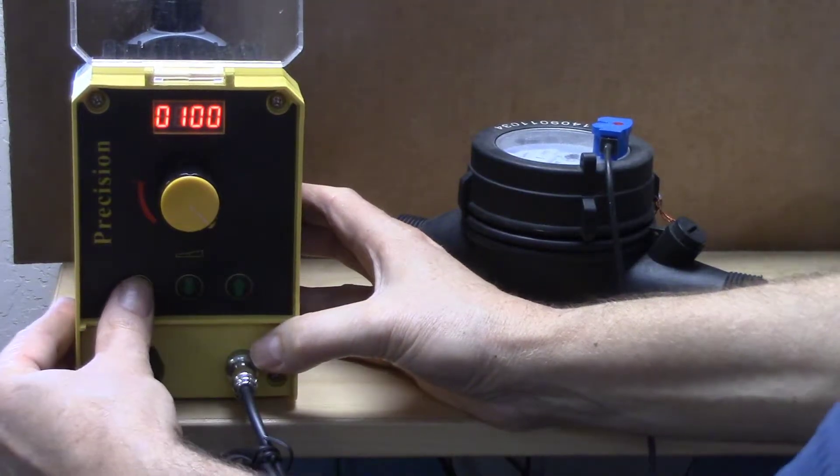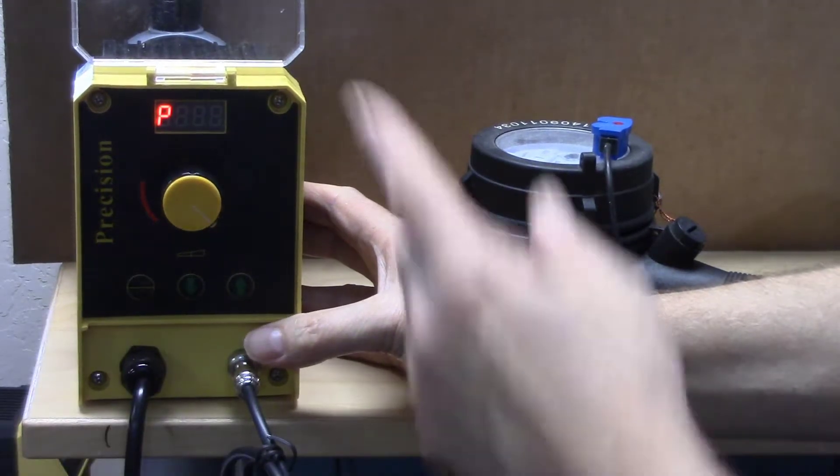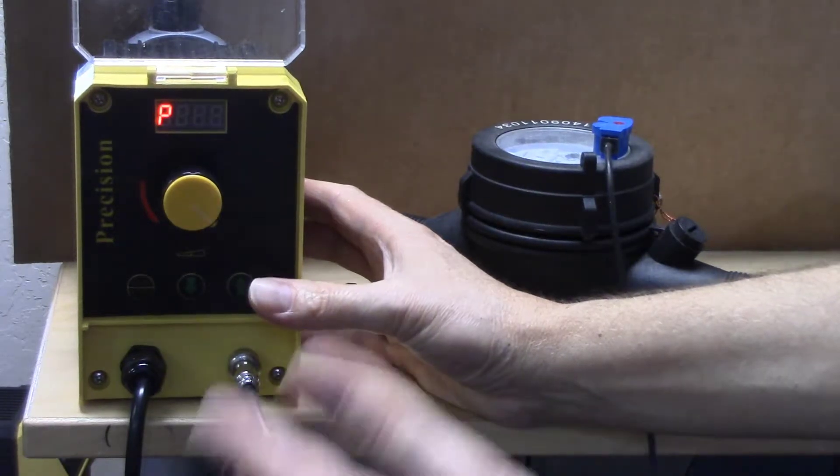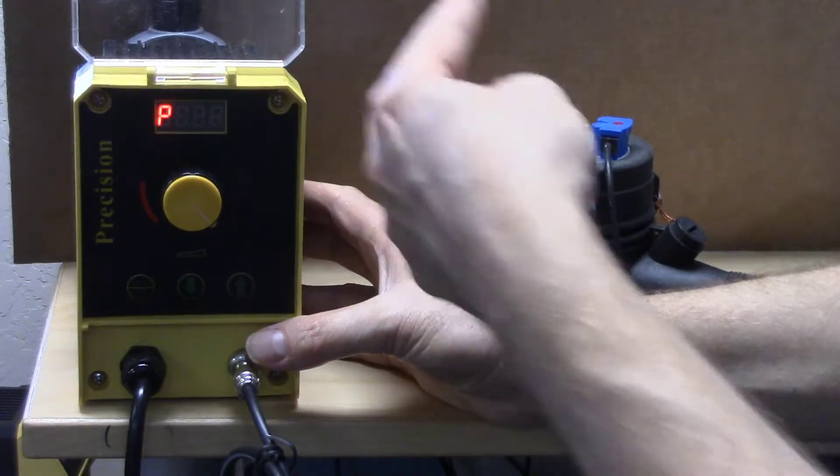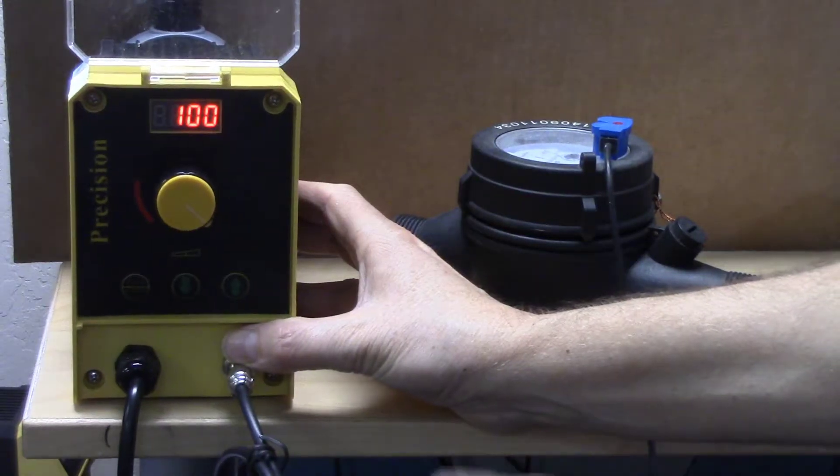Now we go back—press and hold to get back to P, or let it time out. I'm on P, I know I'm in manual mode, and I have it set at 100. So when I turn on the pump, it's going to say 100.